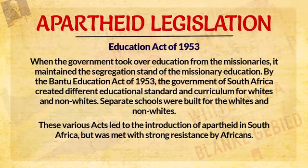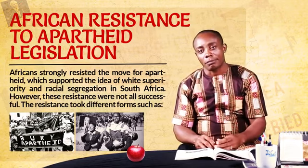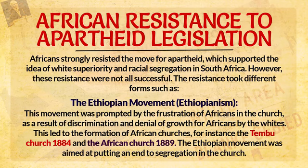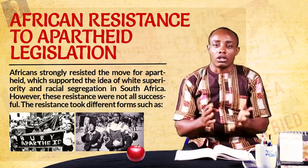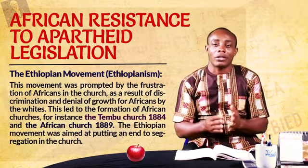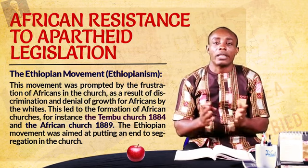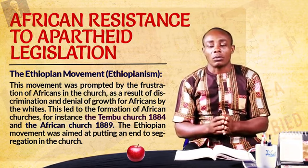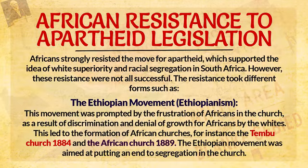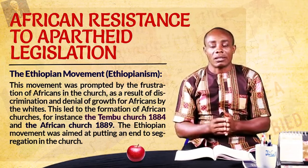These various acts led to the introduction of apartheid in South Africa. Africans in South Africa strongly resisted apartheid ideas and legislation because it supported white superiority. The first form of resistance was in the church — in the movement known as Ethiopianism or the Ethiopian movement. In the church, Africans were discriminated against by whites; they were not allowed to preach or take up certain positions. This frustration made Africans form their own churches. For instance, in 1884 the Temple Church was formed, and shortly after, the African Church was formed in 1889.